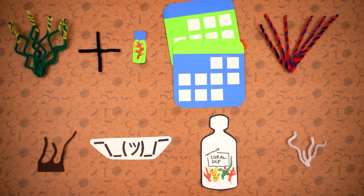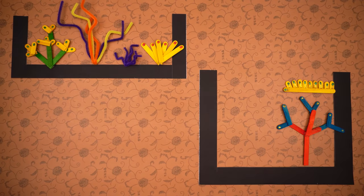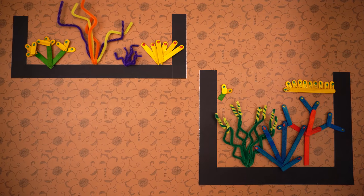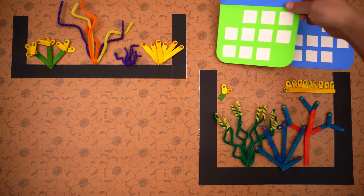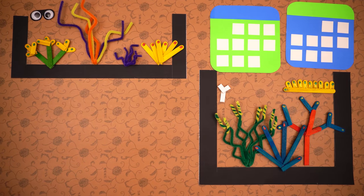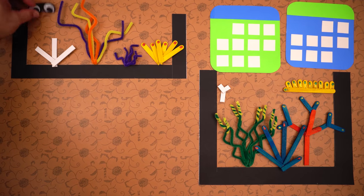One time I took a frag from a seemingly healthy colony and placed that frag in another system. Months went by, and for some reason one day the frag looked bad. I went over to look at the colony that has been in a totally different system for months, and sure enough the colony also looked bad. And by the way, the remaining corals in both systems looked fine.